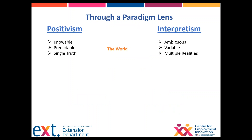These are two ways of looking at the world — two paradigms, which is just a fancy word for your viewpoint. Positivists, who represent the traditional academic type of research, tend to see the world as knowable and predictable. They believe there is a single truth — observable, measurable — and if it's not observable, it's not important.